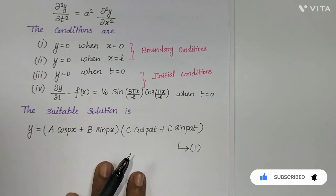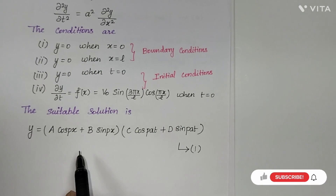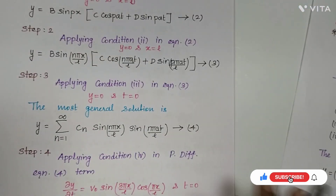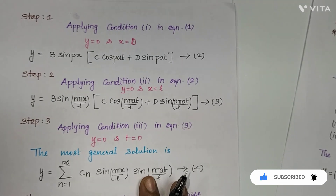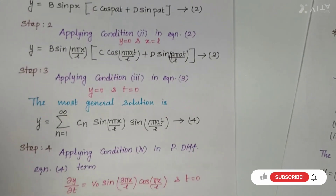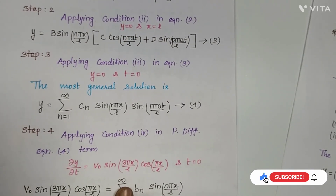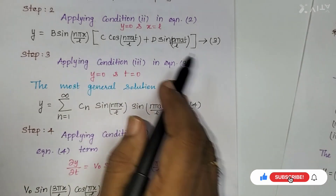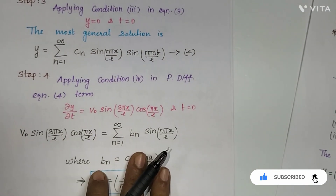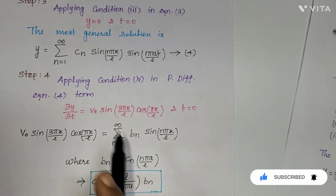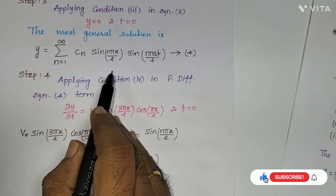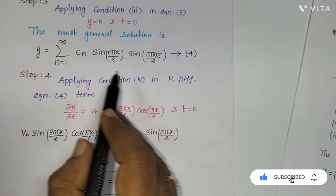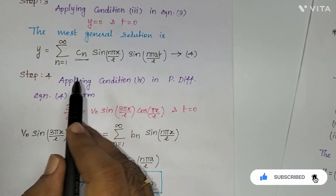The suitable solution is y = (A cos λx + B sin λx)(C cos λat + D sin λat). This is equation 1. In step 1, we apply condition 1 in equation 1 to get equation 2. In step 2, we apply condition 2 in equation 2 to get equation 3. We take the coefficient as cn here, as previously explained in the working rule for non-zero velocity.